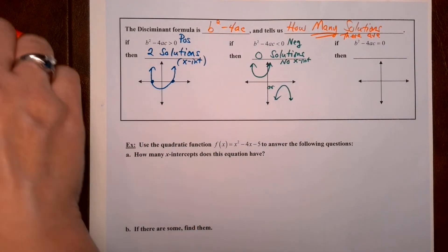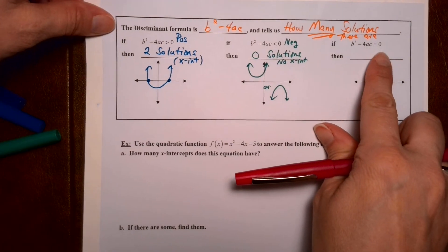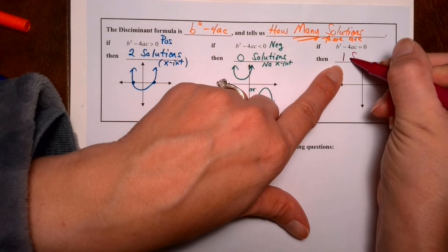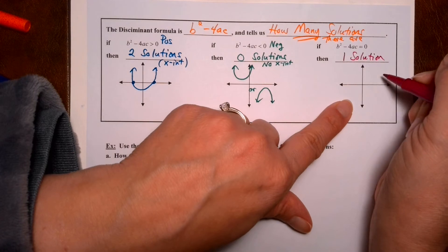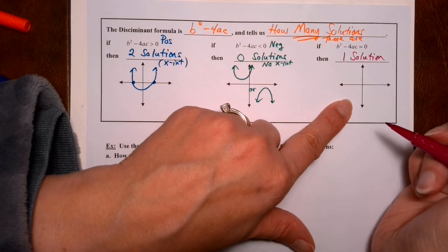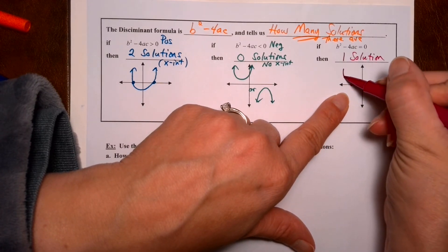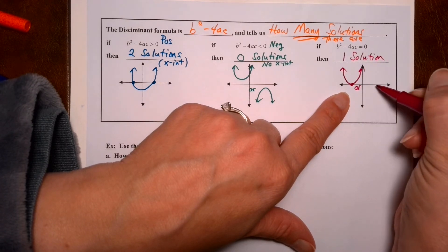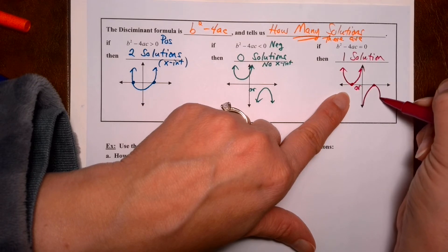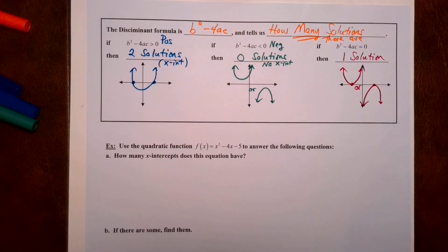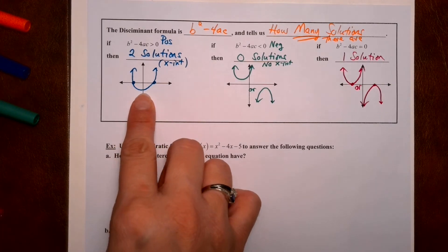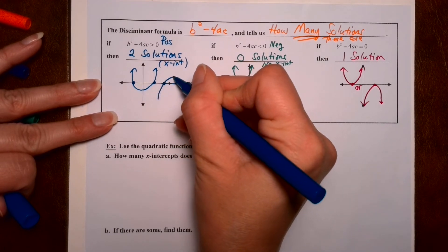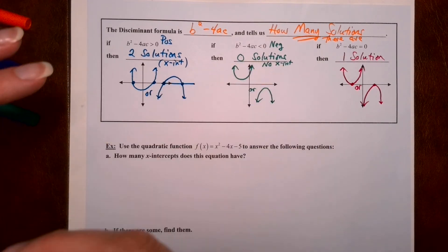And then there's that third category: if the discriminant equals exactly zero, then there's only one solution, or one x-intercept. That's where the parabola just brushes the x-axis. The parabola could open up or open down — either way, it touches the x-axis at exactly one point.